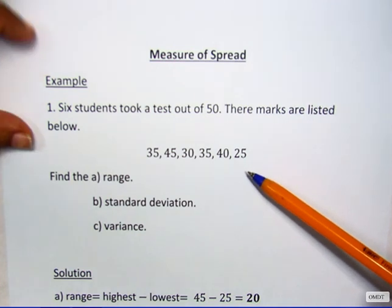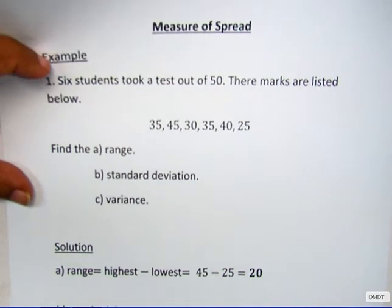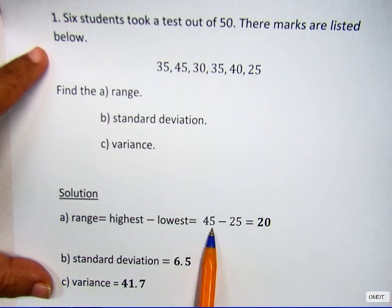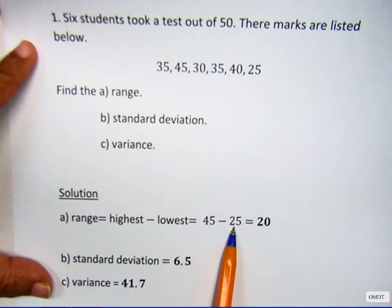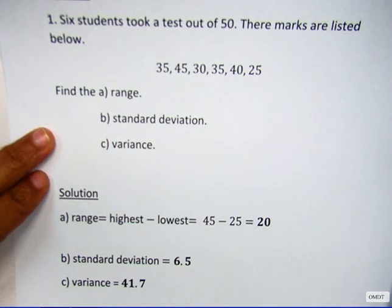First part says find the range. The range is equal to the highest minus the lowest. So the highest mark is 45 minus the lowest mark 25. The range is 20. Next it says calculate the standard deviation and the variance.